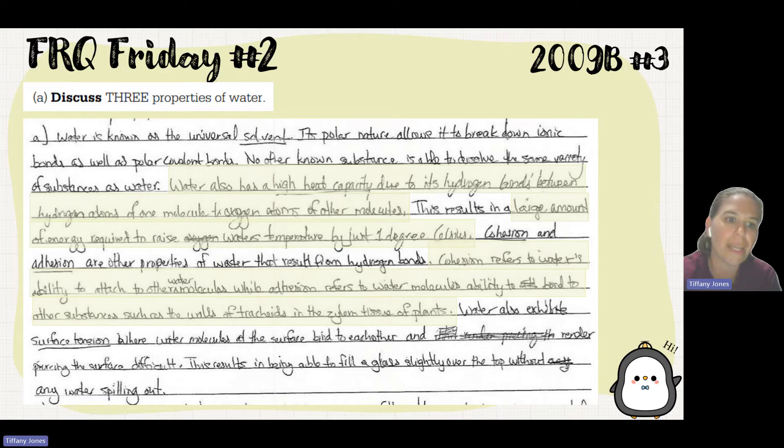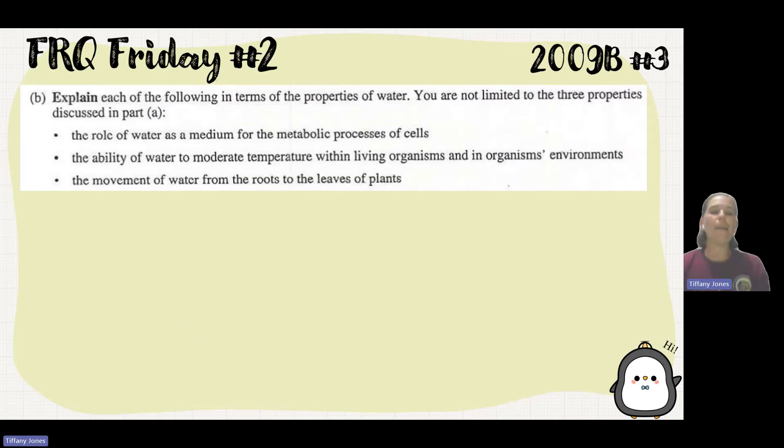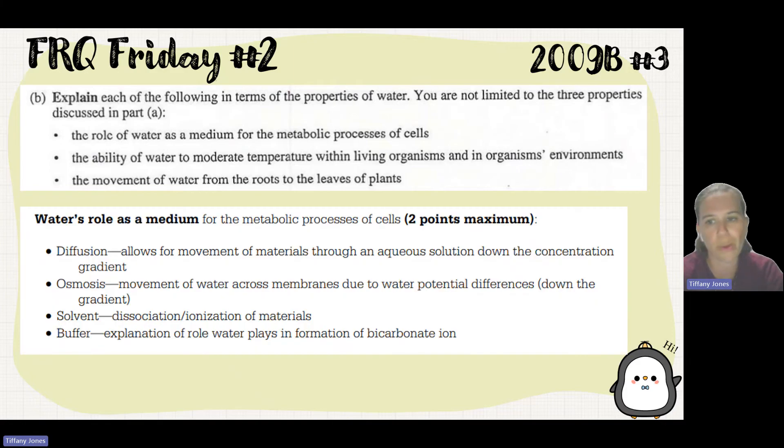Water exhibits surface tension, which is a type of cohesion where water molecules at the surface bind to each other, making piercing the surface difficult. That results in the ability to fill a glass slightly over without spilling. Now we look at the role of water as medium.